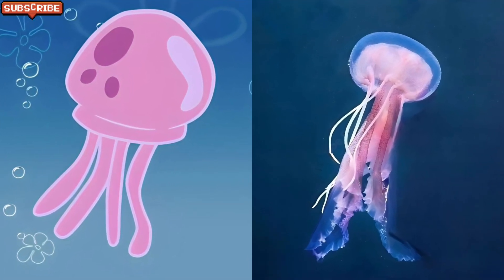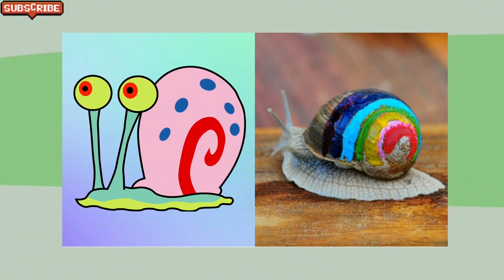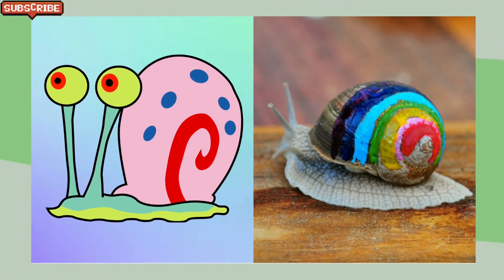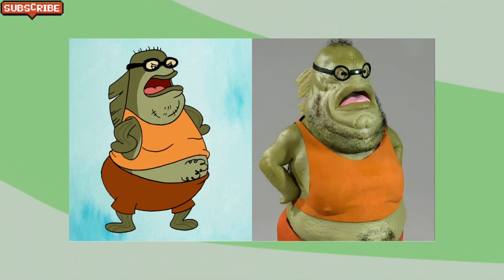The series focuses on a yellow sea sponge named SpongeBob SquarePants, who enjoys being a cook at the Krusty Krab and lives in the Pacific Ocean.